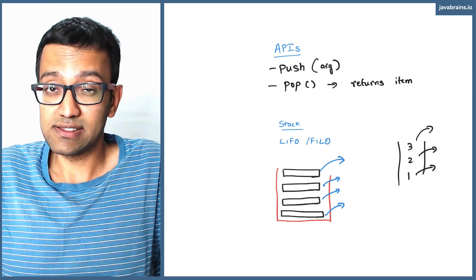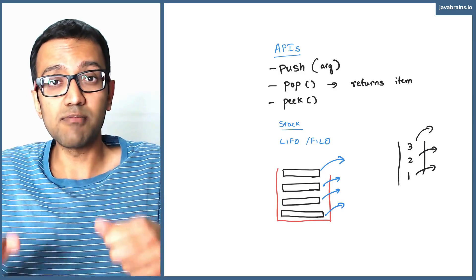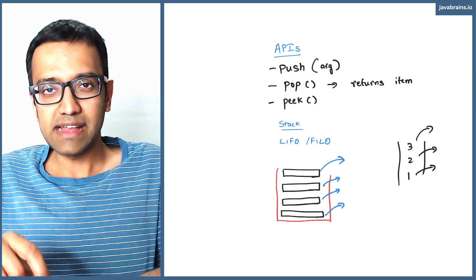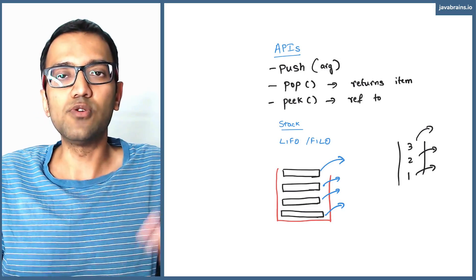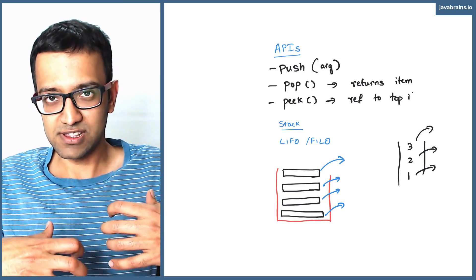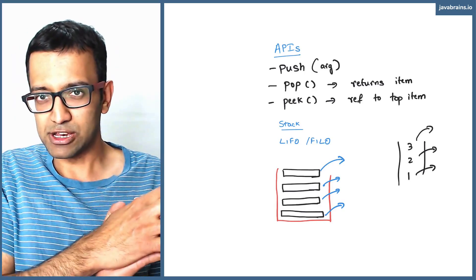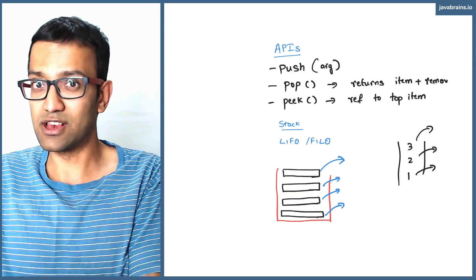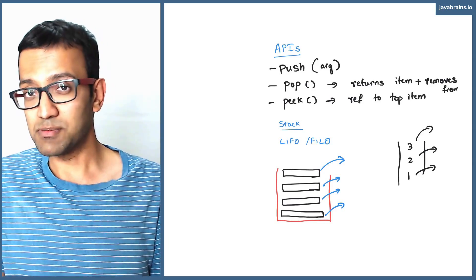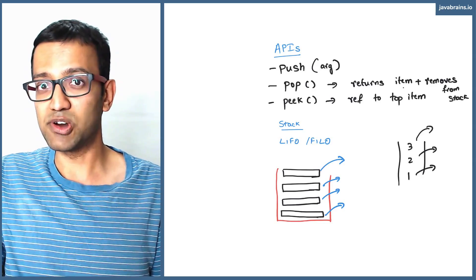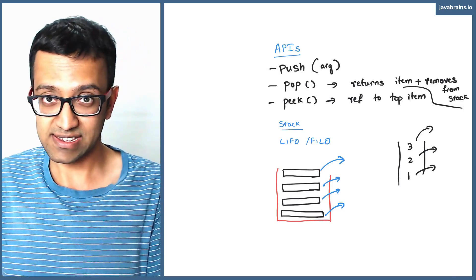There is another API that the stack provides in Java called peek. Peek does not modify the state of the stack — it just returns the reference to the topmost item in the stack without removing it. When you do a pop, you get the item that was at the top of the stack and it's removed. When you do a peek, you don't remove the item from the top of the stack, you just get a reference to it, but it's still on top. So if you peek and get an item, the next pop will return that same item, but then the stack is modified.